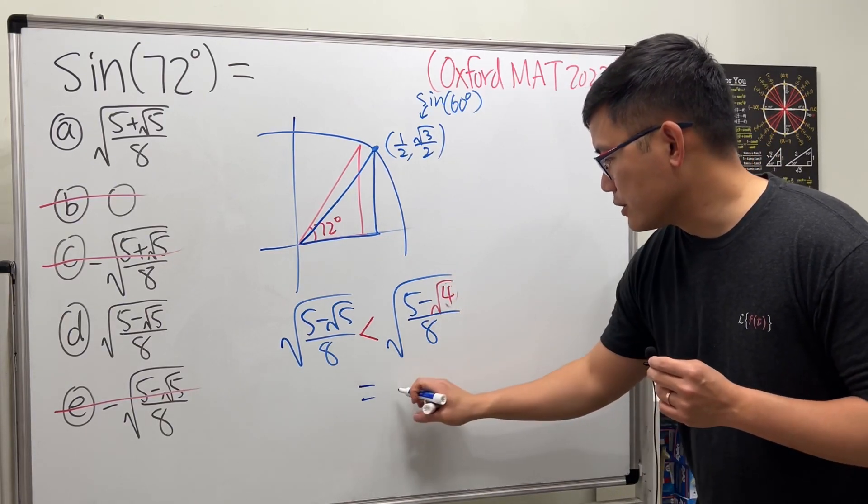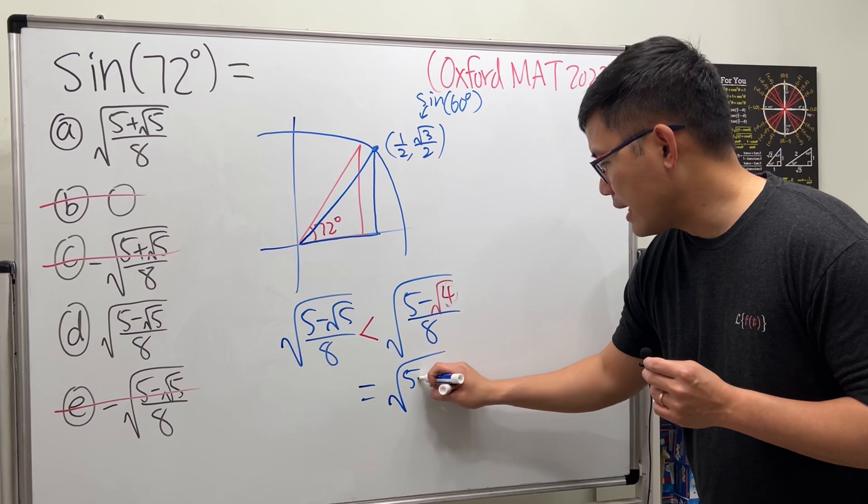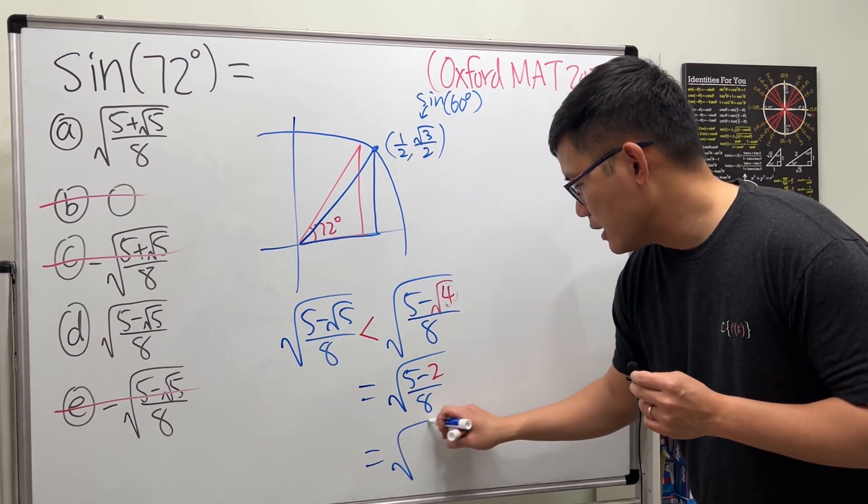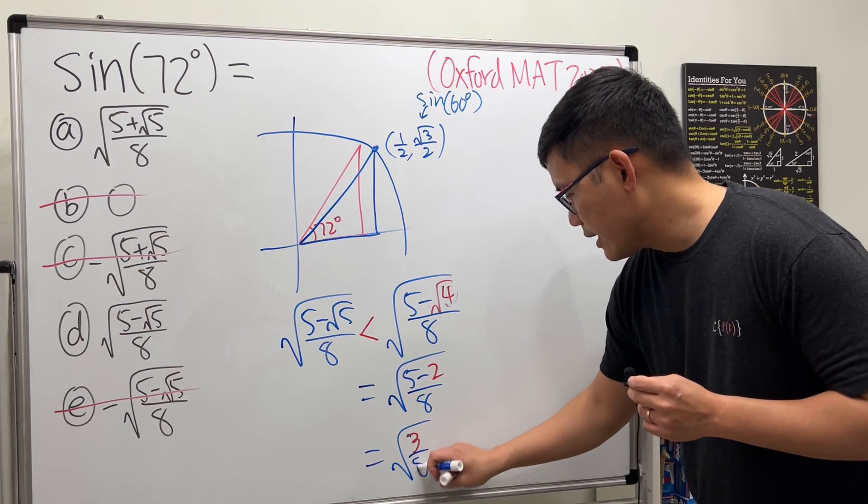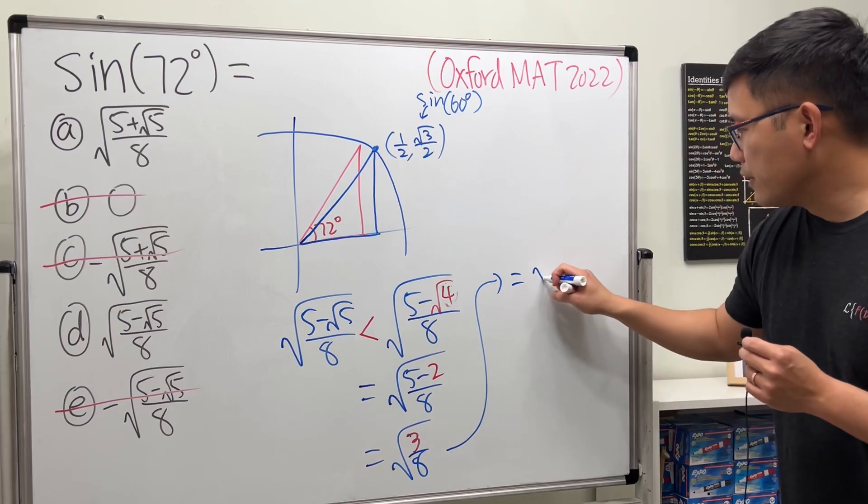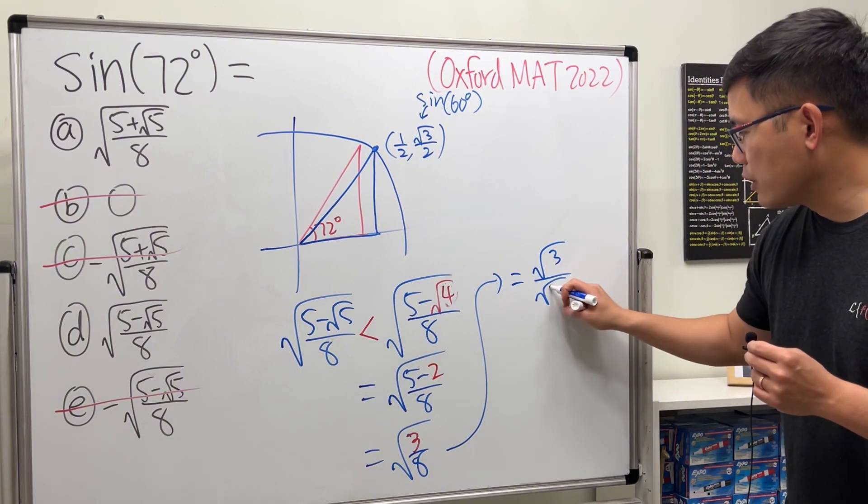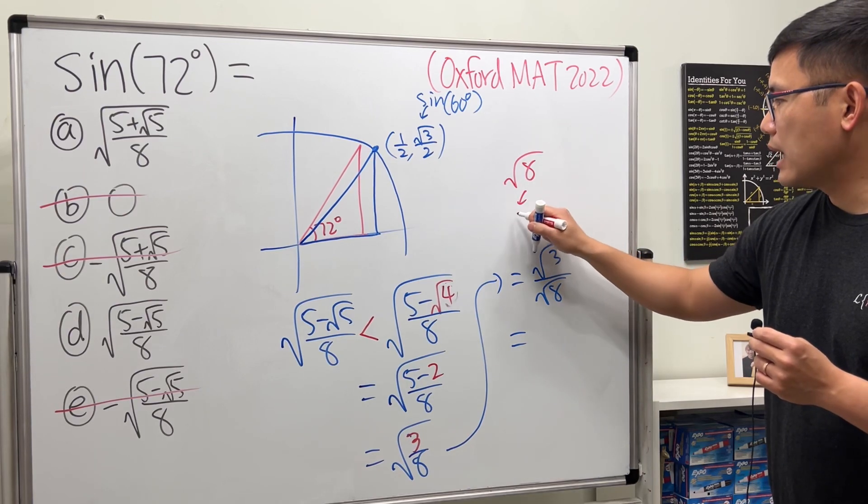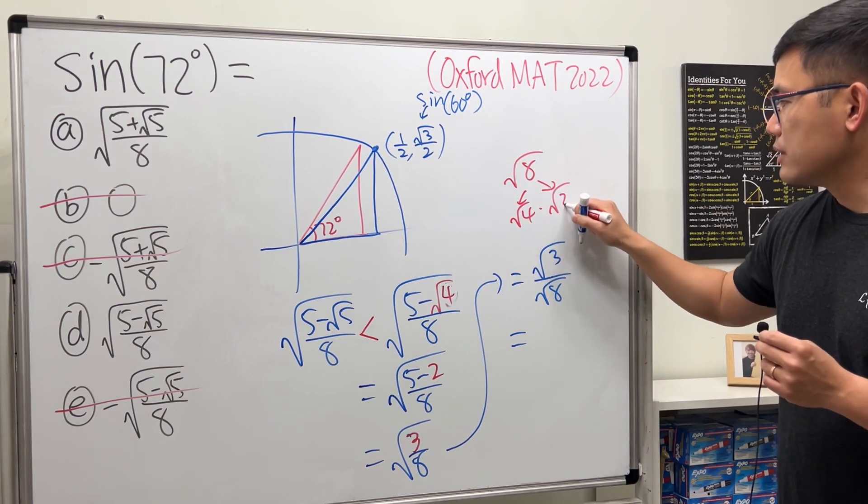Now work this out. This is equal to the following: this is just a 2, so it's (5 - 2)/8, which is the same as 3/8. And then we can see that this right here is equal to √3/√8.